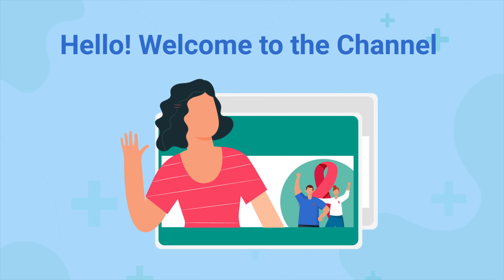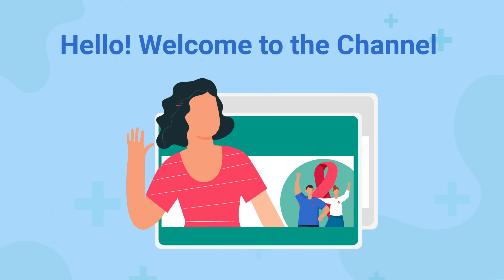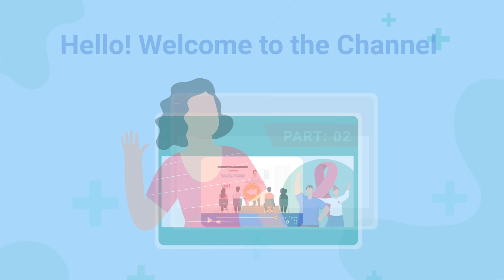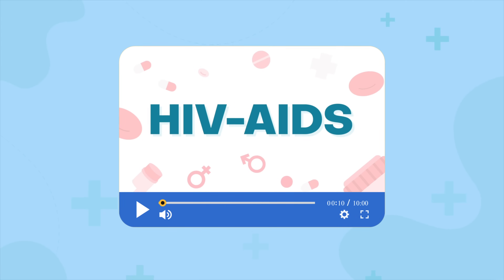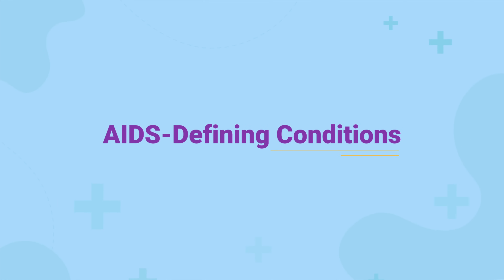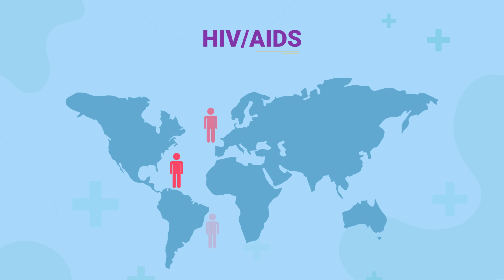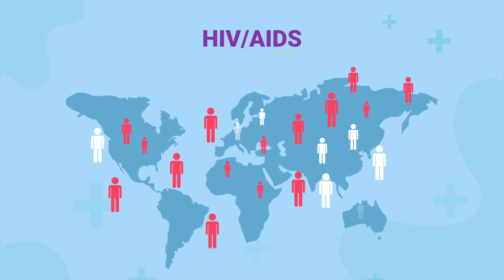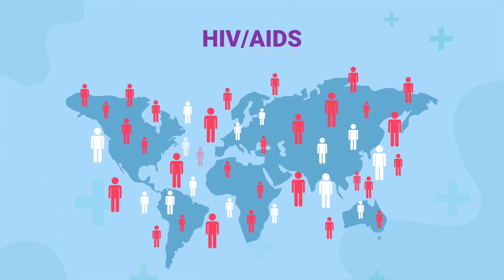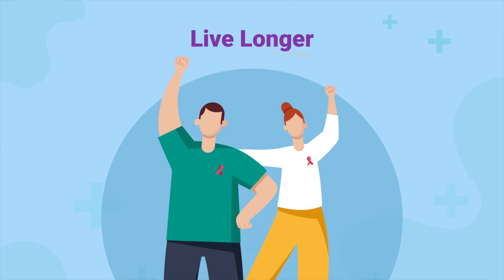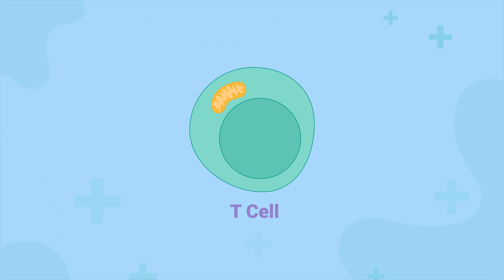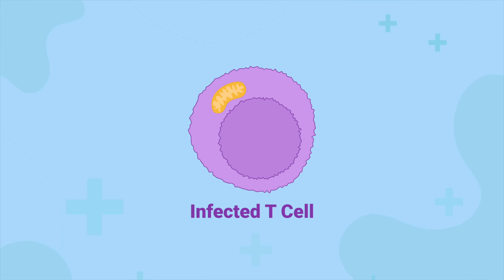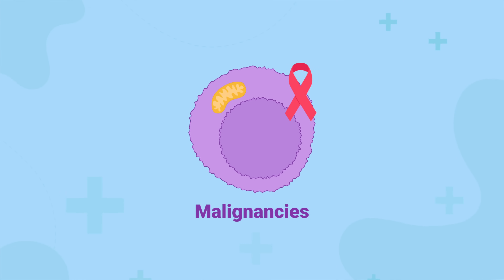Hello, welcome to the channel and the next video on HIV-AIDS, part 2 of 2. Let's briefly recap on what we learned in part 1. We studied about AIDS-defining conditions, the increasing prevalence of HIV-AIDS, which is driven in part by HIV-infected people living longer thanks to antiretroviral treatment. And we briefly touched on how T-cell exhaustion results in opportunistic infections and malignancies.